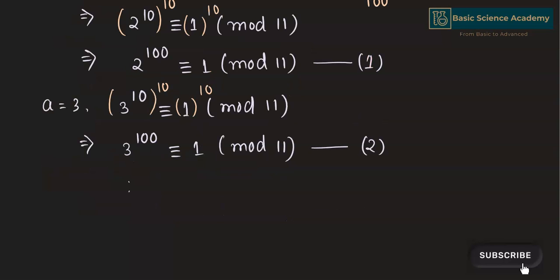In a similar way, we can find that up to 10 to the power of 100 is congruent to 1 mod 11. This is our equation 9.